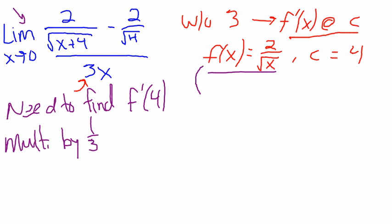f of x is this. I can write that as f of x equals 2 times x to the negative 1 half, using powers. Then I can derive that easily. f prime of x is equal to - I get negative 1 half the power times 2.